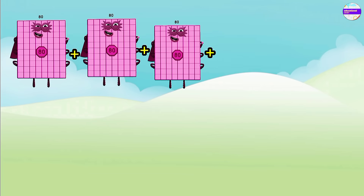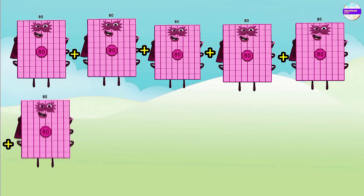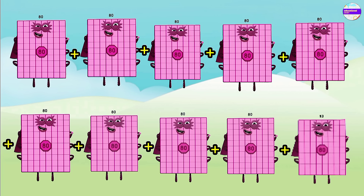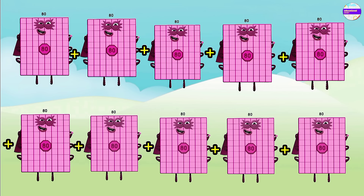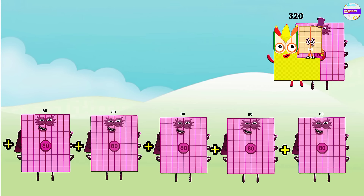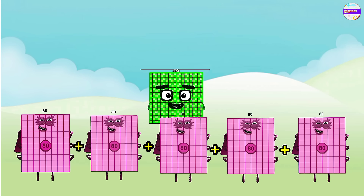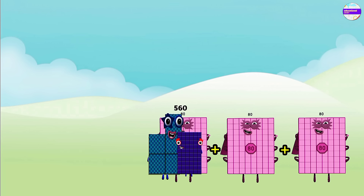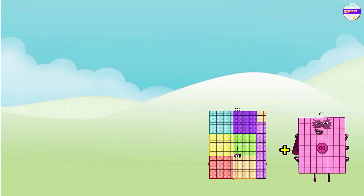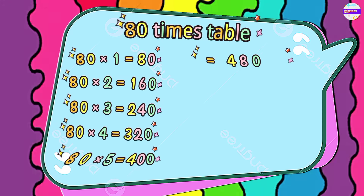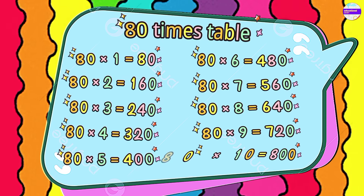Let's make the 80 times table by using repeated addition. 80 plus 80 is 160, 240, 320, 400, 480, 560, 640, 720, and the last one is 800. Yes, we did it — 80 times table!